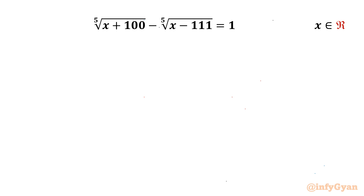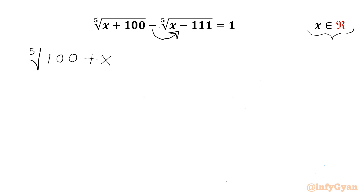The equation is: 5th root of (x + 100) minus 5th root of (x - 111) equals 1, and we are going to calculate real solutions. Let us get started by considering this minus sign into the radical. So I will rewrite our equation as 5th root of (100 + x) plus 5th root of (111 - x) equals 1.